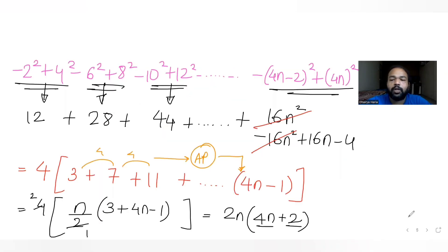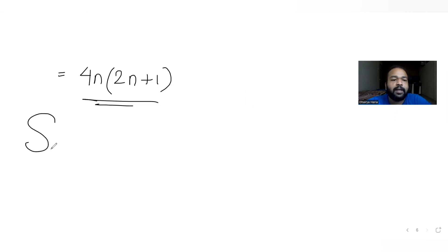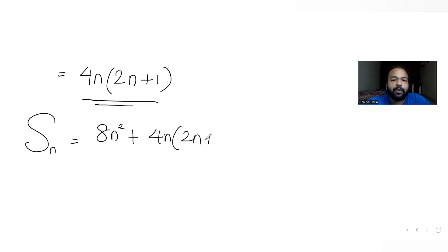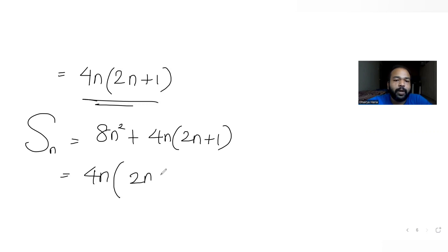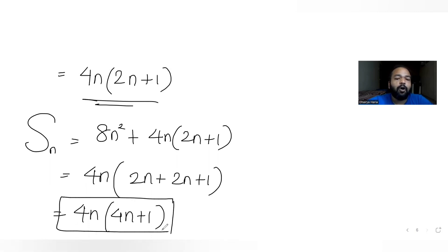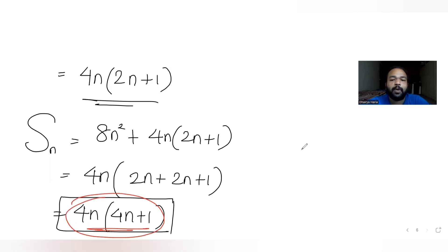Now combining both lists: Sn = sum of odd terms + sum of even terms = 8n² + 4n(2n+1) = 8n² + 8n² + 4n = 16n² + 4n = 4n(4n+1). So the total sum Sn = 4n(4n+1).